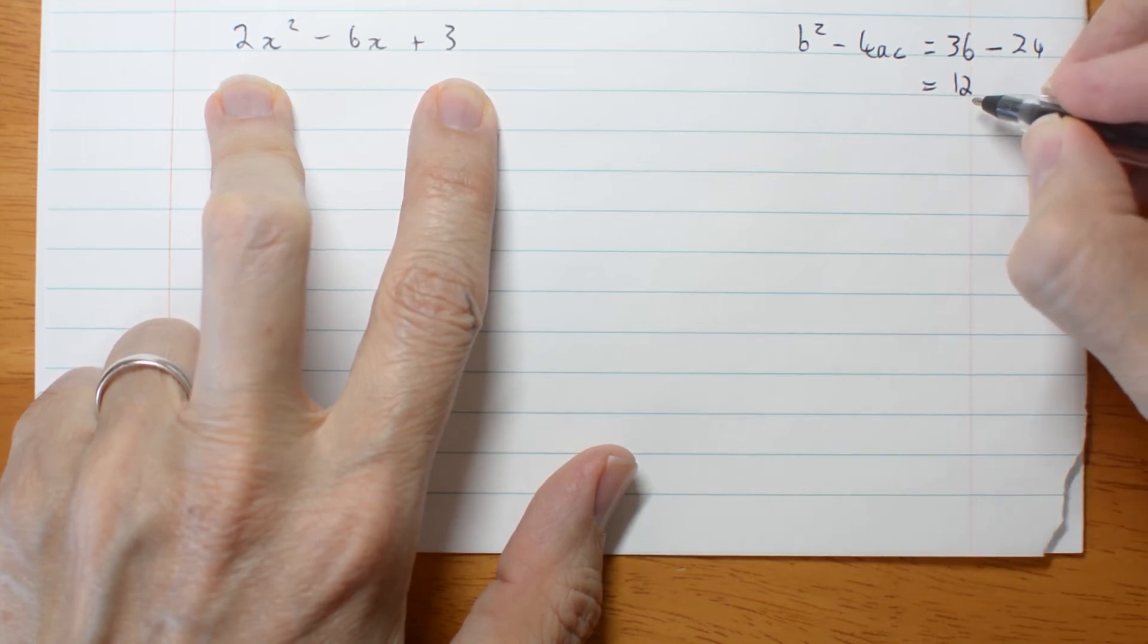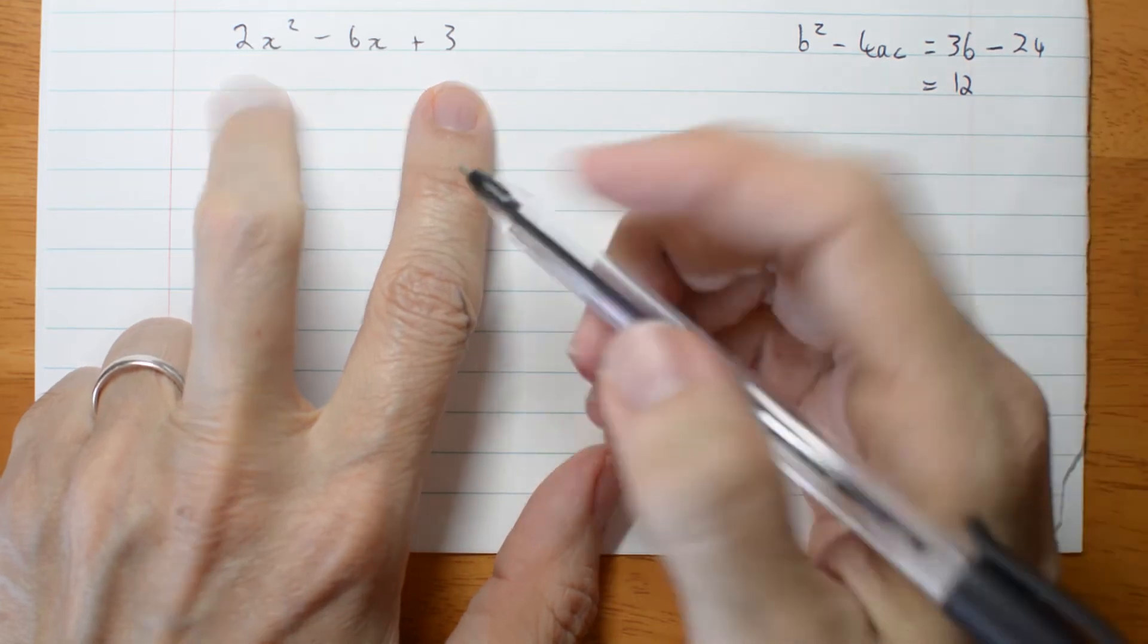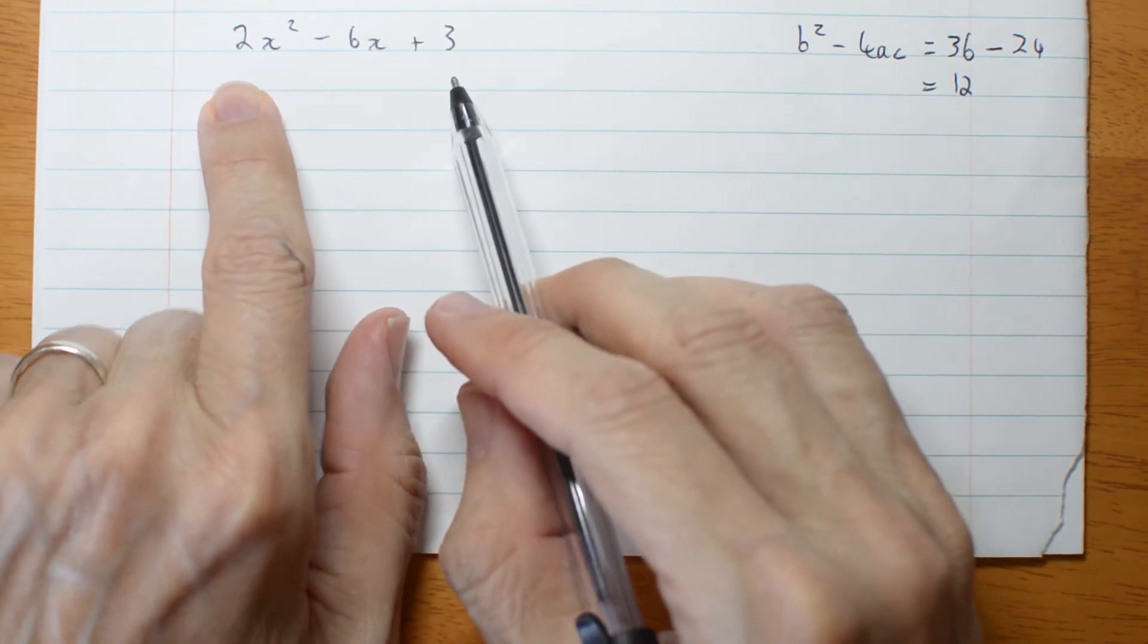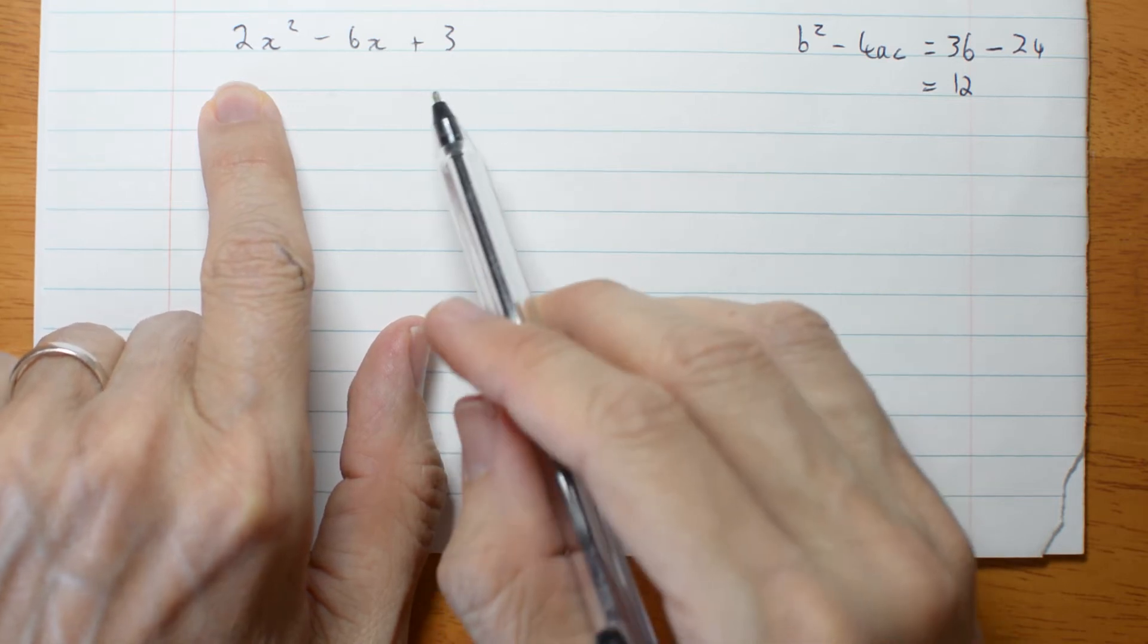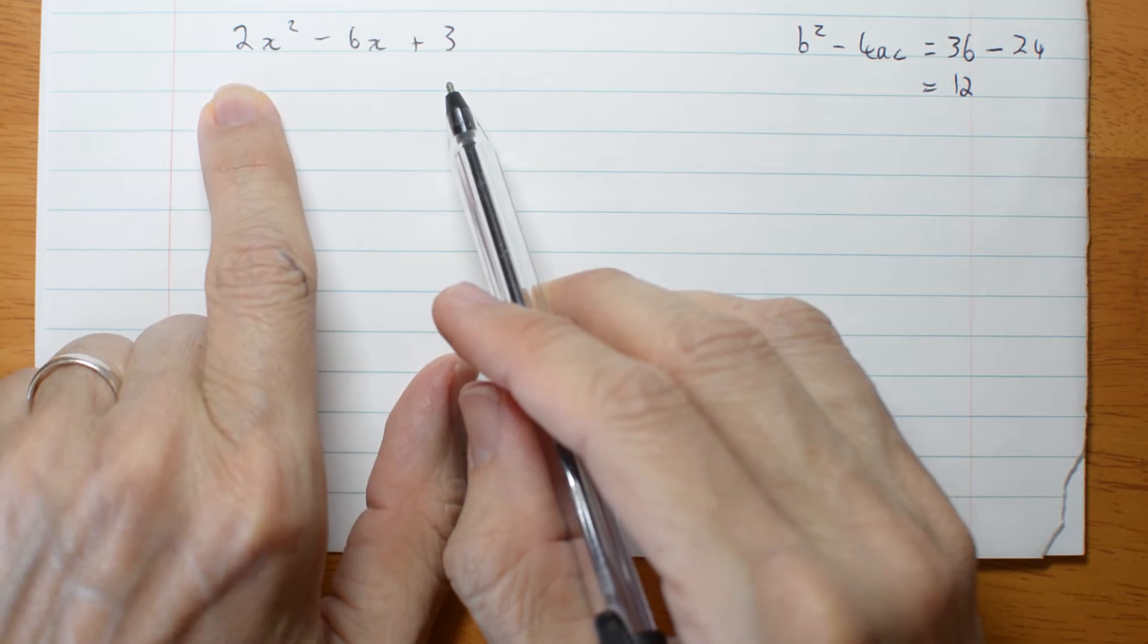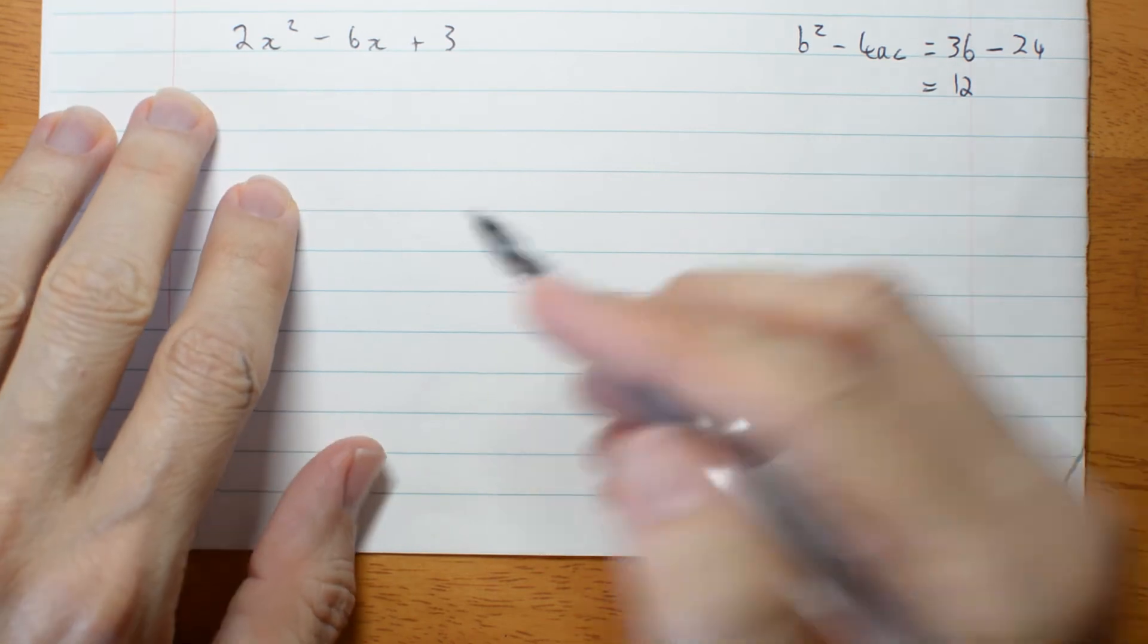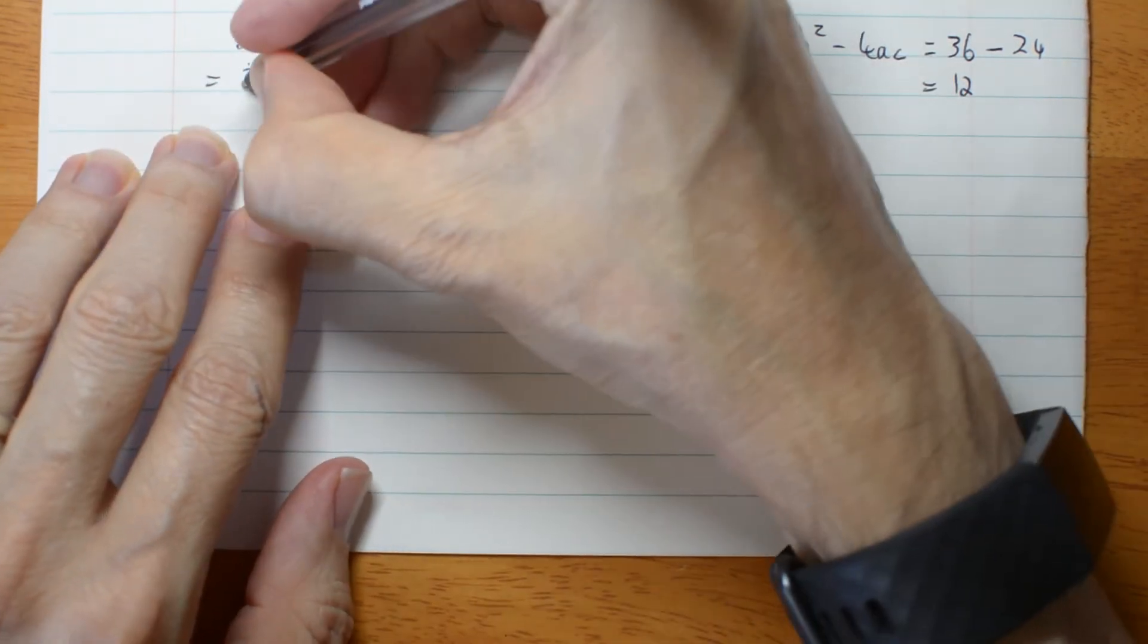That means my linear factors are going to involve thirds. Now it is possible for you to come up with them, but it's very, very difficult. You have to come up with two numbers that add to negative 6 and multiply to 6. And doing that involving the thirds is very complicated. There is an easier method and that is completing the square. So let's complete the square. You may remember the easiest way to complete the square for a non-monic quadratic is to take the 2 out.